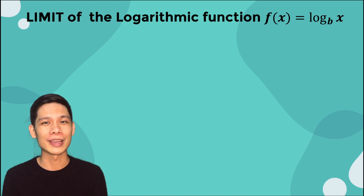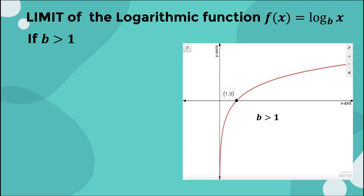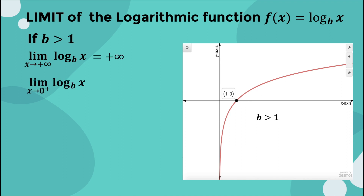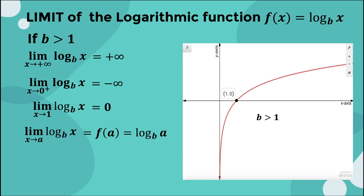If b is greater than 1, then the limits of the logarithmic function f(x) = log base b of x are the following. As shown in the graph, the limit as x approaches positive infinity is equal to positive infinity. The limit as x approaches 0 from the right is equal to negative infinity. The limit as x approaches 1 is equal to 0. And the limit as x approaches a is equal to f(a), which is equivalent to log base b of a, where a is in the domain of f.